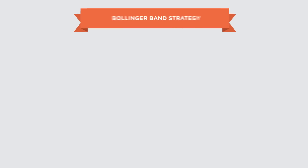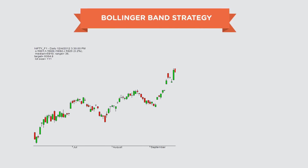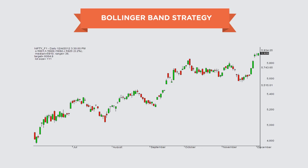Let's explore one simple way that we can use the Bollinger Bands to put up a trade. The premise of the trade is based on the price piercing the upper or the lower band and then quickly reversing. Let's add Bollinger Bands to this Nifty chart. Now notice these points.